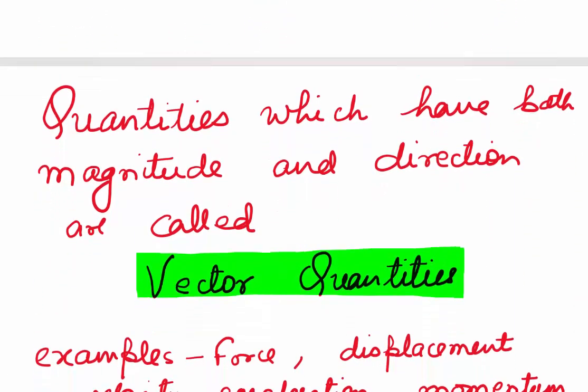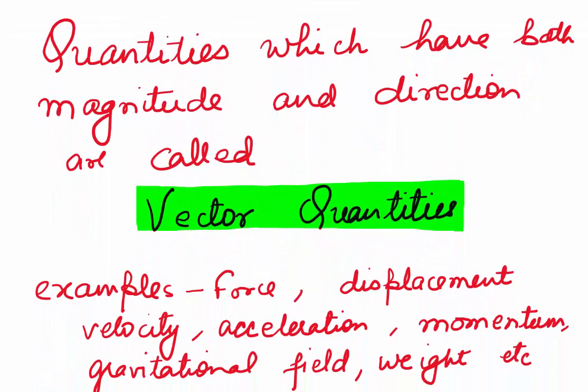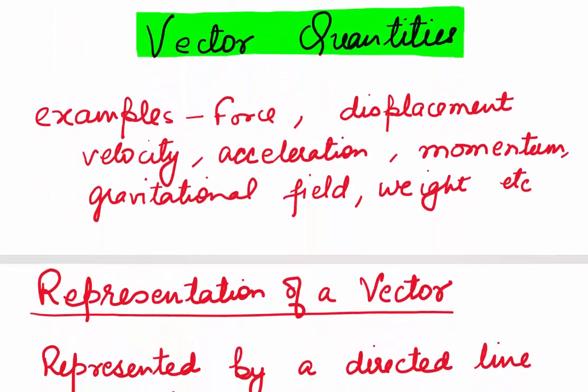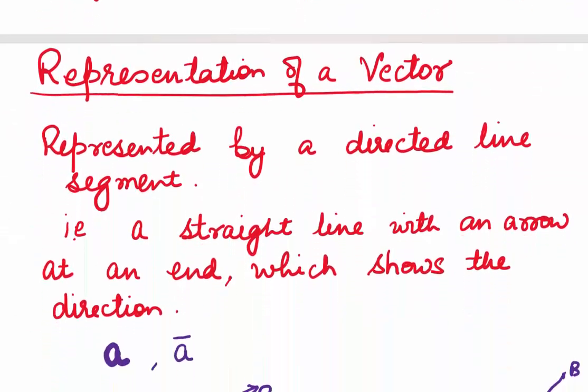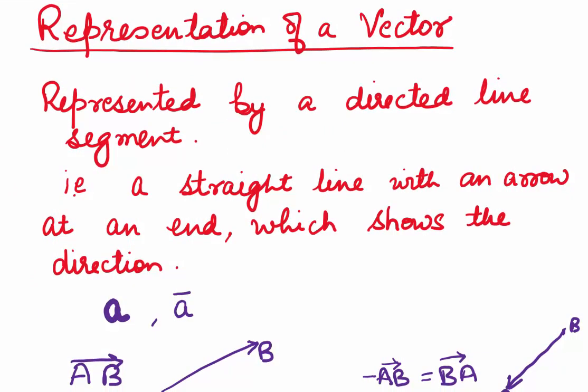Now when we talk of the direction of some quantity, we need to depict that. How do we represent vectors? To represent vectors, we use directed line segments — that is, we use a straight line. It will have a tail; the starting point is the tail and the end point would be the head, which ends with an arrow. So a straight line with an arrow at the end which shows the direction is how we represent vectors.